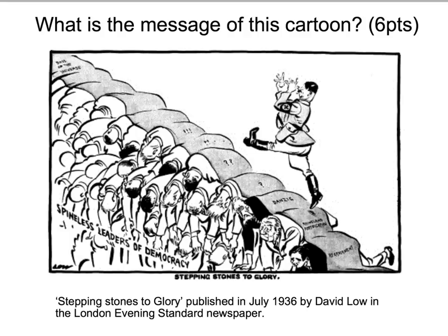Let's look at the key details and symbols within the cartoon. You should be drawn to the key words at the bottom. There is clearly a path that Hitler is taking, starting with 'Rearmament' and 'Rhineland.' David Lowe is showing that Hitler is at the beginning of a path, and at the top Hitler is marching towards where it says 'Boss of the Universe' — suggesting he is trying to take over Europe, or even pushing Germany's aggressive policies throughout the world.